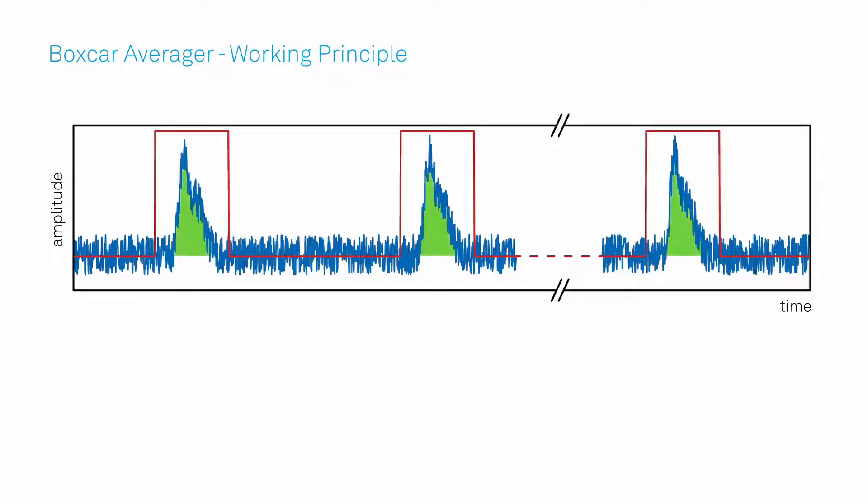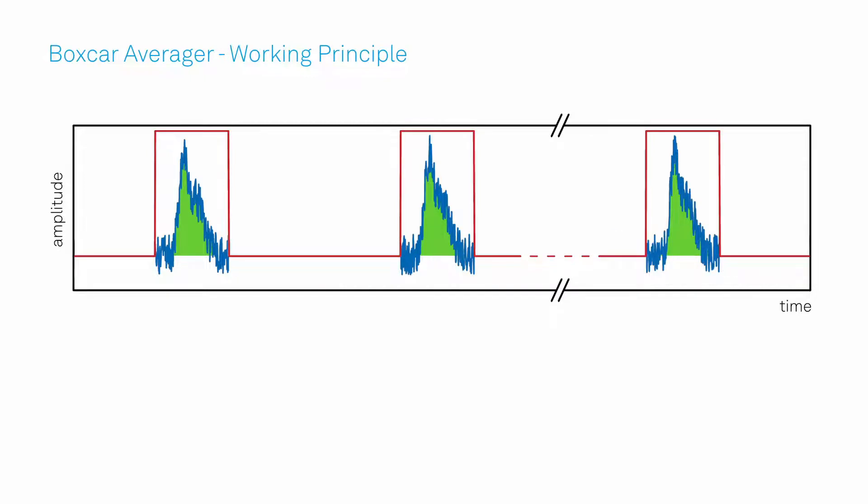The signal is integrated inside the boxcar window and ignored outside of it. To increase the signal-to-noise ratio, the result can be averaged over many periods.